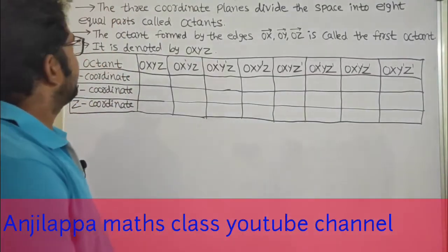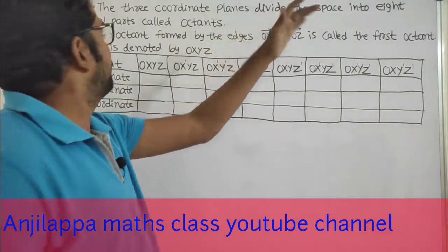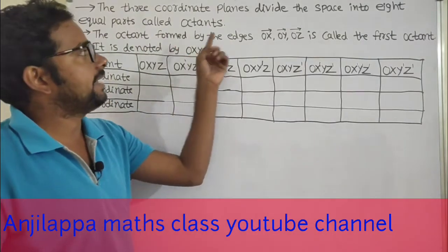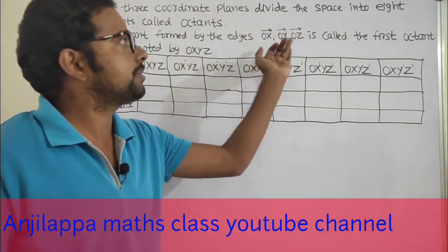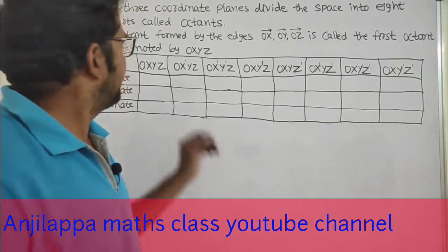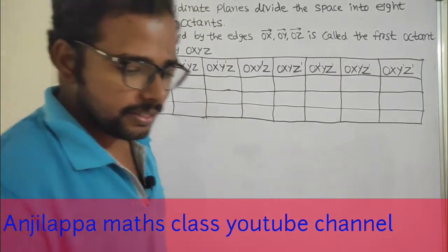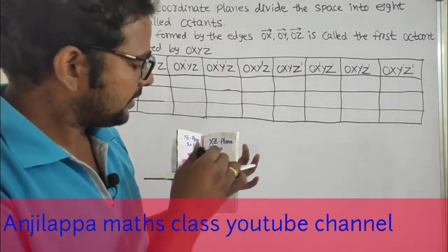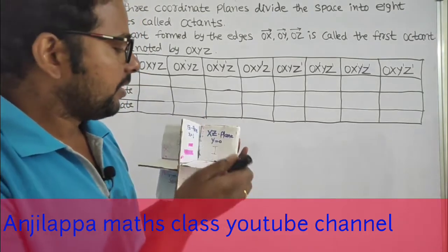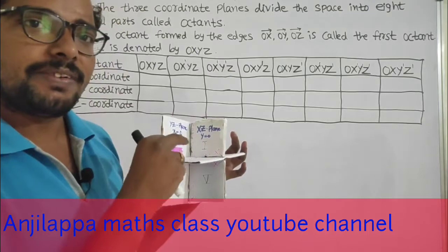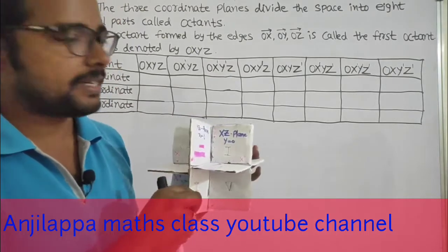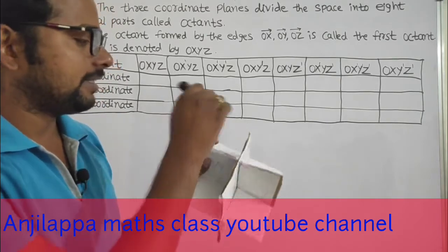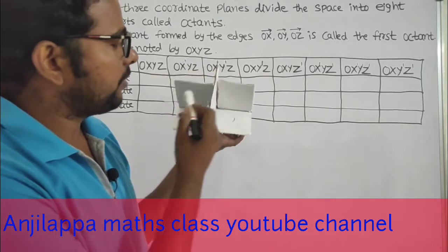The three coordinate planes divide space into eight equal parts. Each part is called an octant. The octant formed by the edges OX, OY, and OZ is called the first octant. Referring to the model: OX, OY, and OZ form the first octant. The three coordinate planes divide space into eight equal parts — there are four octants on top and four octants on the bottom, giving a total of eight octants.